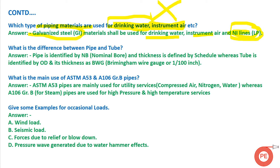An important question: what is the difference between pipes and tubes? Pipes are identified by nominal bore and their thickness is given by schedule number. Tubes, on the other hand, are classified based on outer diameter (OD) and their thickness is given by Birmingham Wire Gauge or one-hundredths of an inch. So the basic difference is: pipes are classified by nominal bore and schedule number, while tubes are classified by OD and wall thickness in BWG.